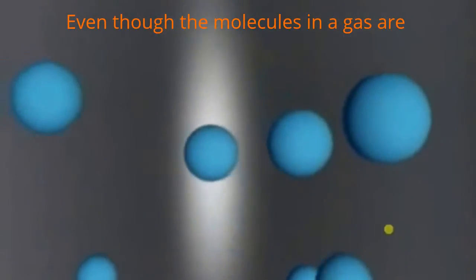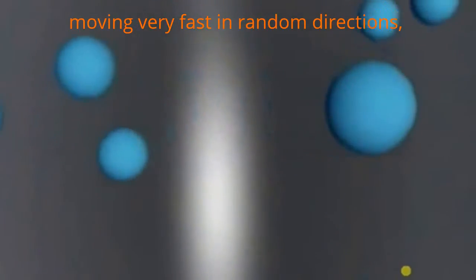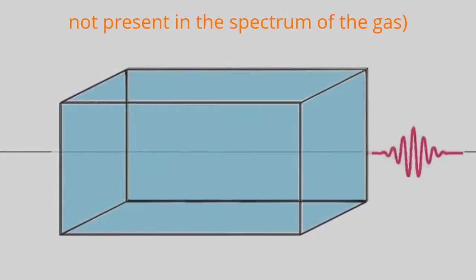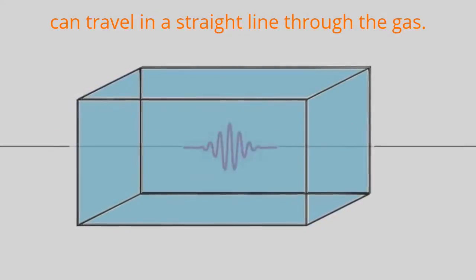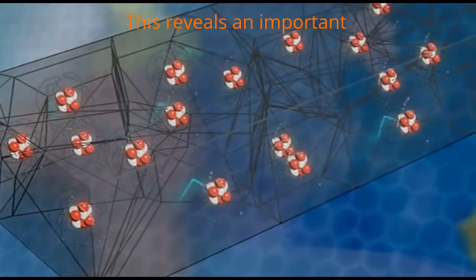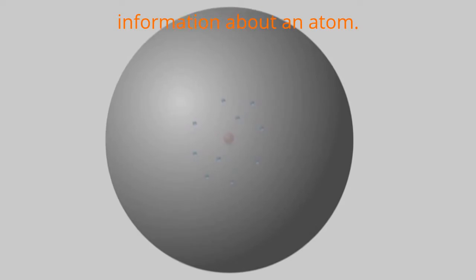Even though the molecules in a gas are moving very fast in random directions, a photon with a wavelength which is not present in the spectrum of the gas can travel in a straight line through the gas. This reveals important information about an atom.